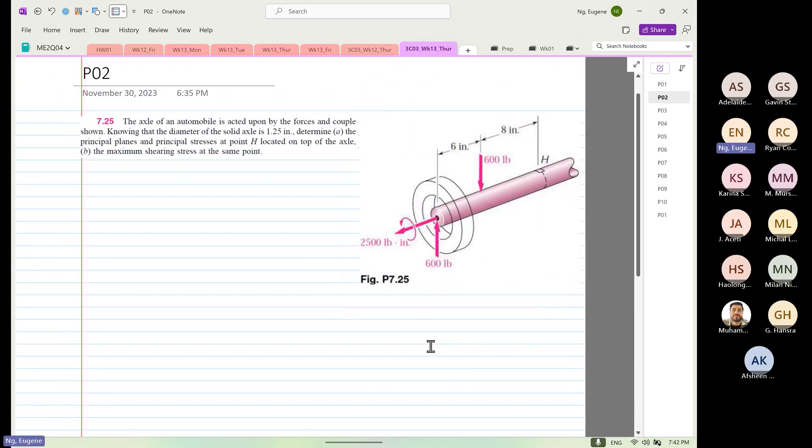The axle of an automobile is acted upon by the forces and couple shown. Knowing that the diameter of the solid axle is 1.25 inches, determine the principal planes and principal stresses at point H located on the top of the axle, maximum shear stress at the point, and the optimum carbon fiber reinforced plastic orientation.